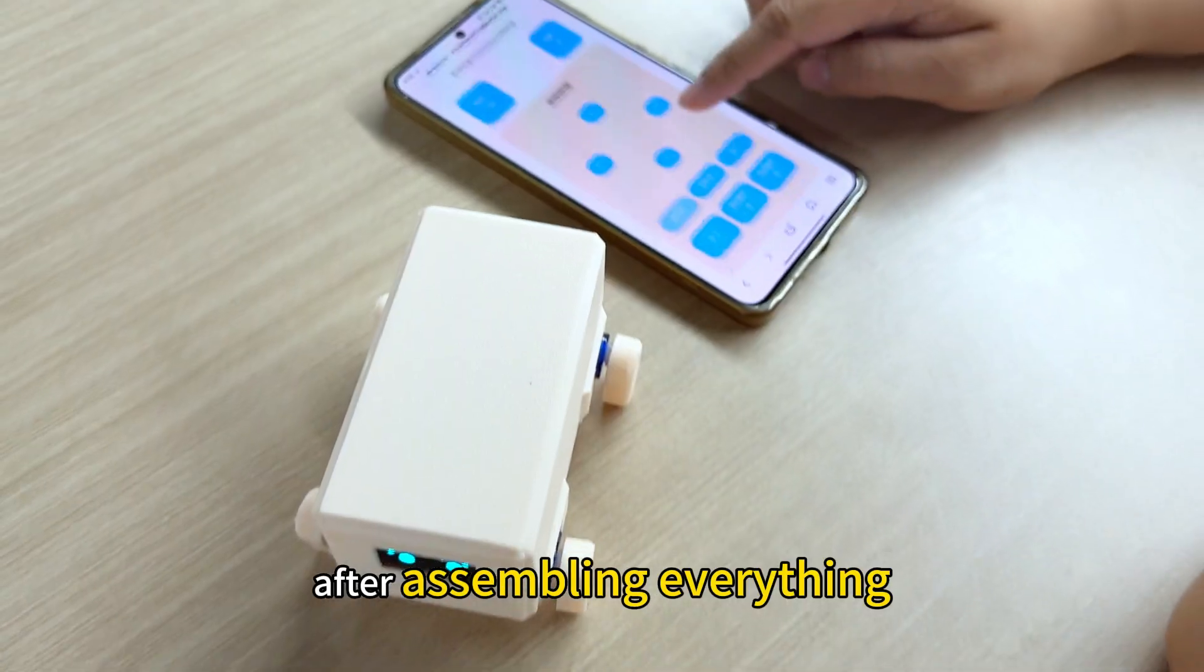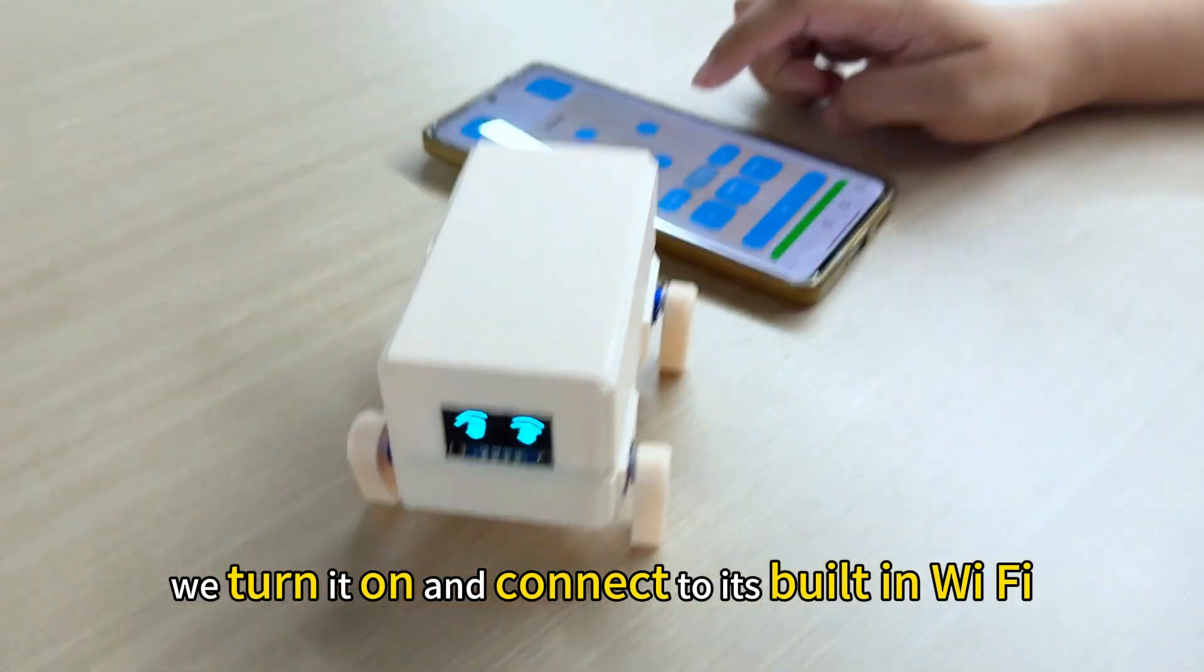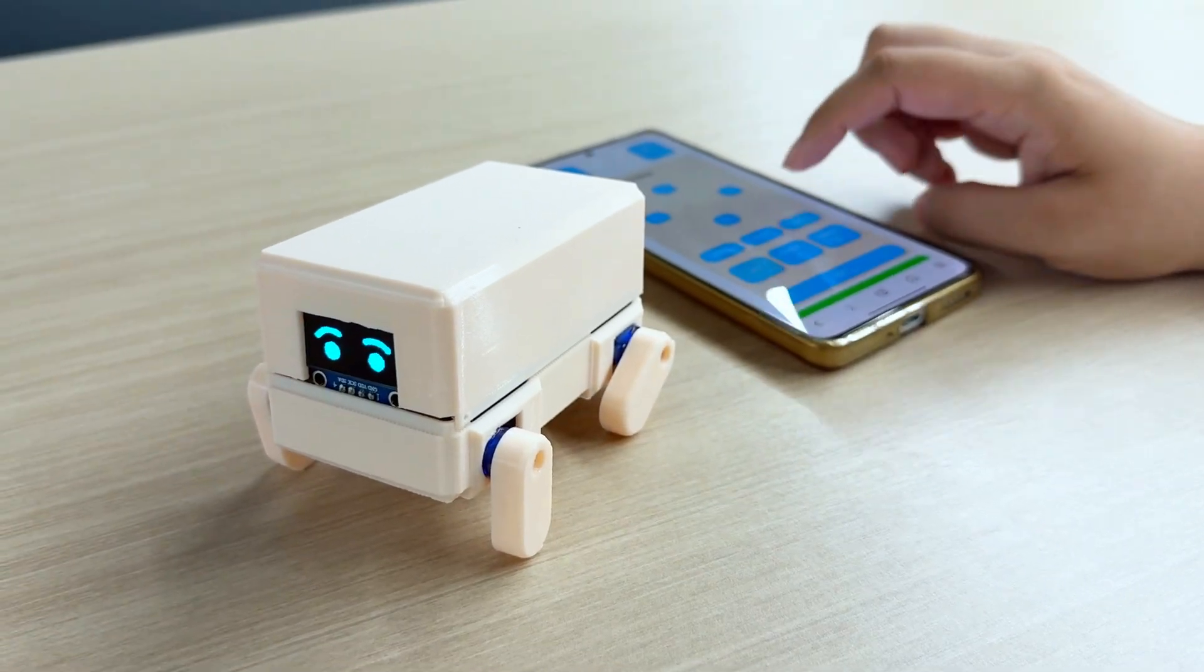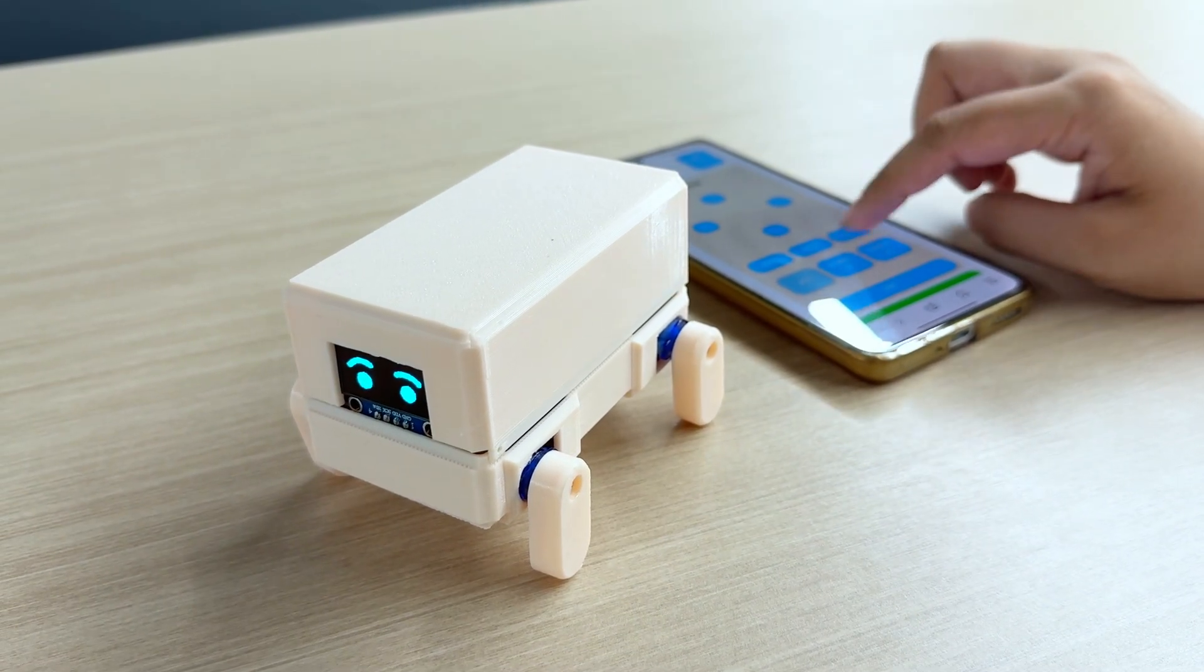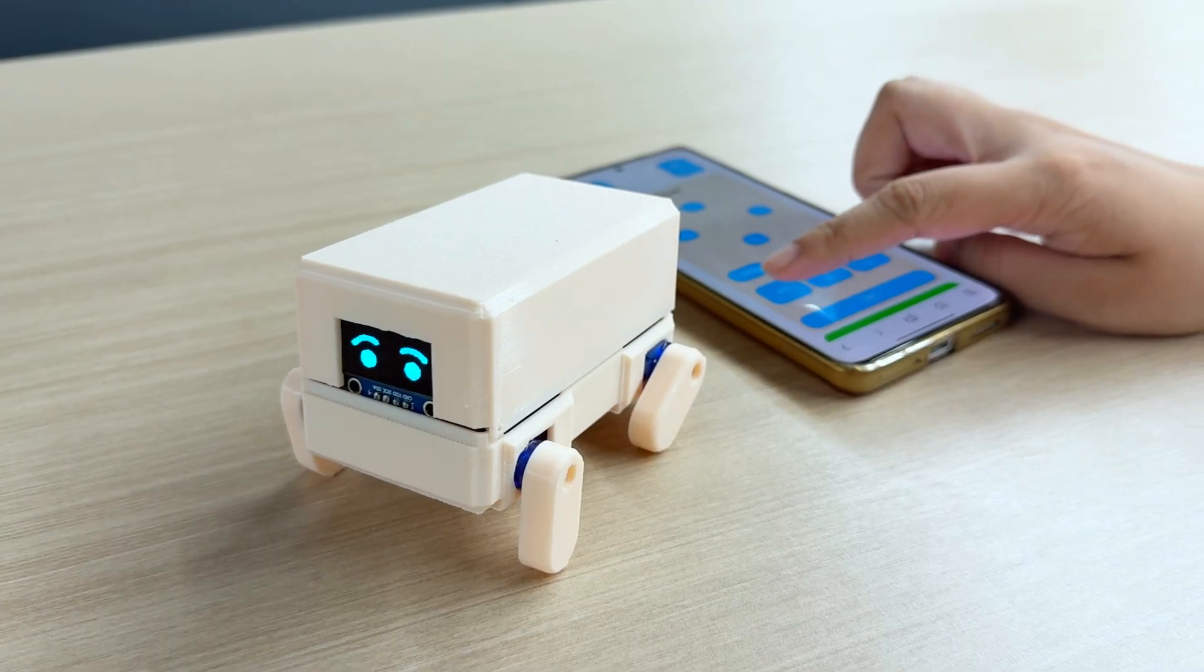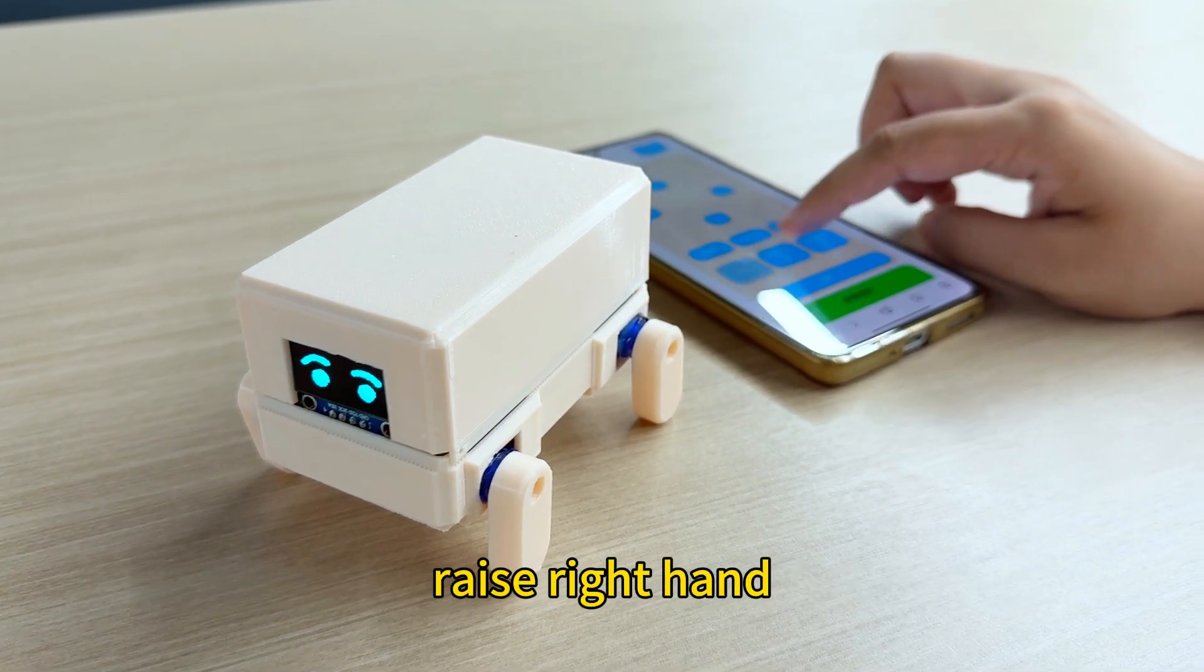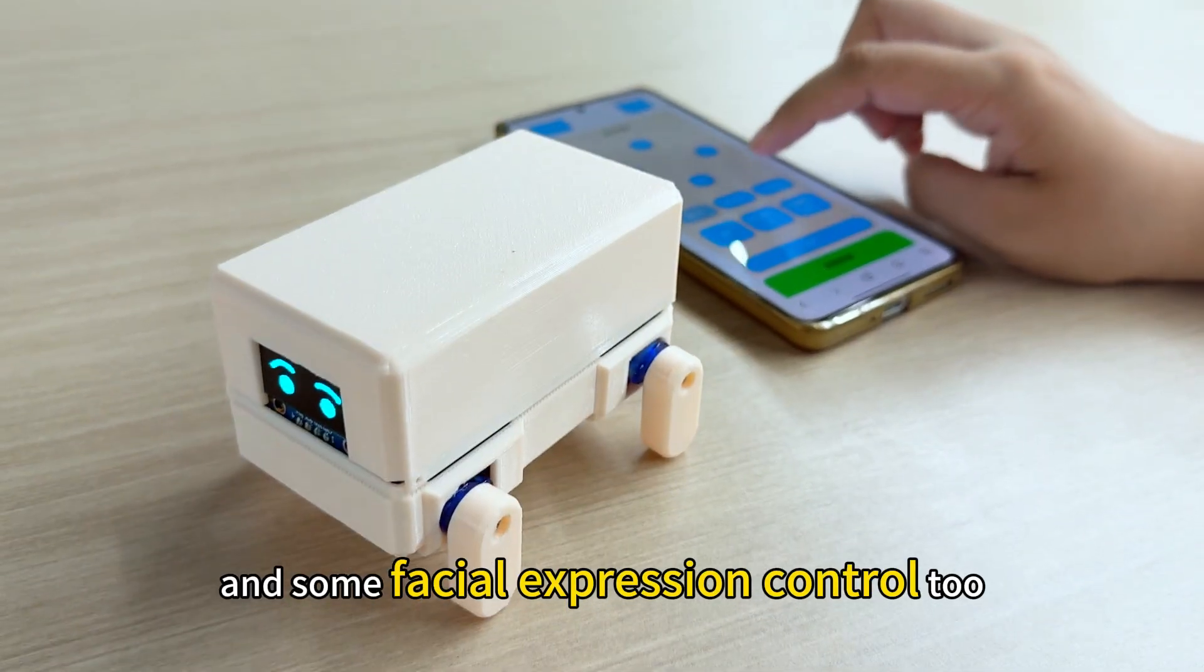After assembling everything, we turn it on and connect to its built-in wifi using a phone. Here's what that looks like. We got motion controls like raised left hand, raised right hand, and some facial expression control too.